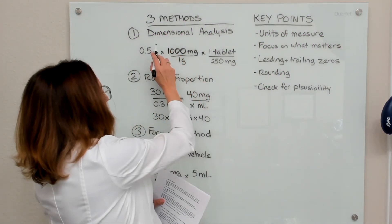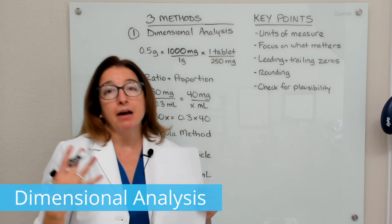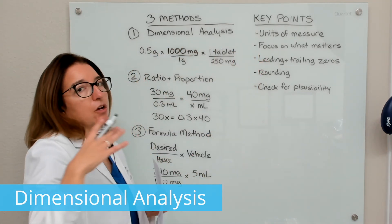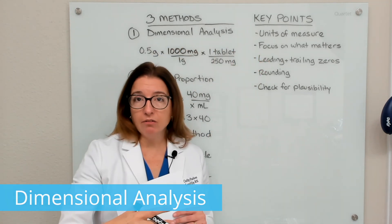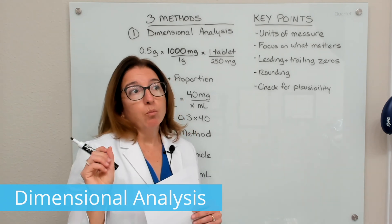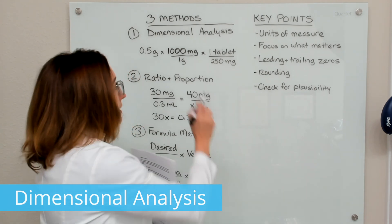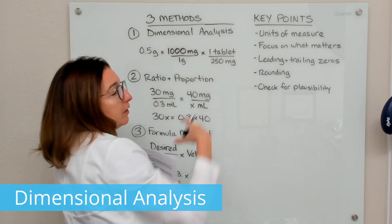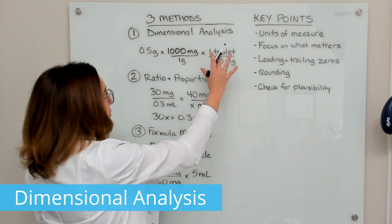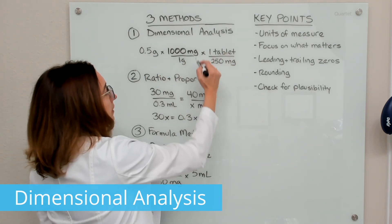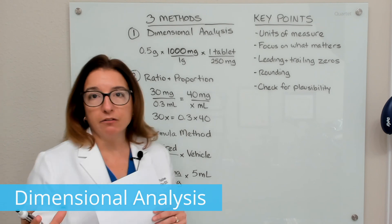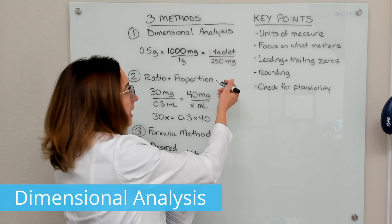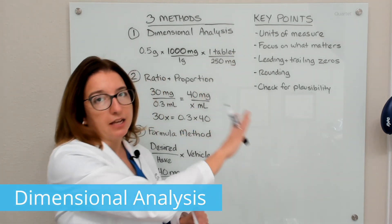The first method I want to talk about is dimensional analysis — it's actually my personal favorite. With dimensional analysis, one equation leads to the answer, so it is the most efficient way to solve dosage calculation problems. One thing to keep in mind with this method is that it matters greatly what you put on top and what you put on bottom for each component of the equation. You need to place the units so that like units cross off and you are left with the units you are looking for. If you reverse the ratio and had milligrams on top and tablets on bottom, it would not work out. So it matters how you place your units.